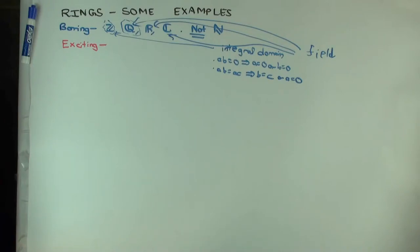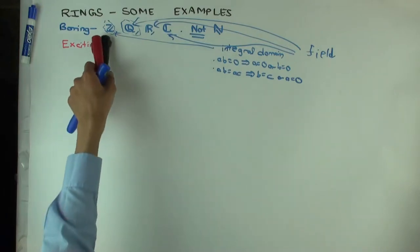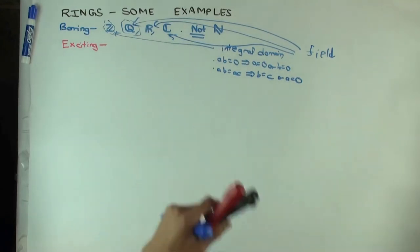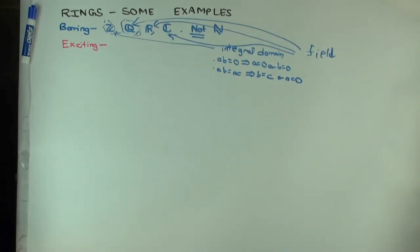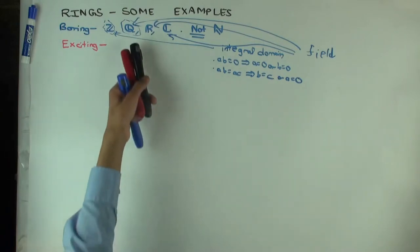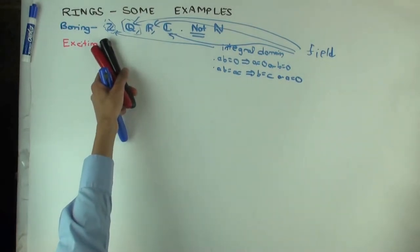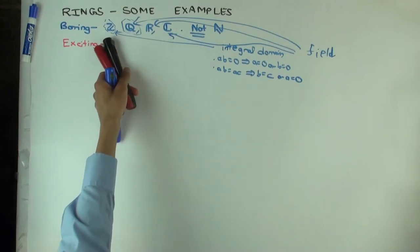There's something interesting I want to say: any integral domain, you can put it inside a field. If I give you an integral domain, how do you make a field containing it? It's actually the same idea as the construction of the rationals from the integers. So given any integral domain like Z, you can construct a field like Q which contains it.